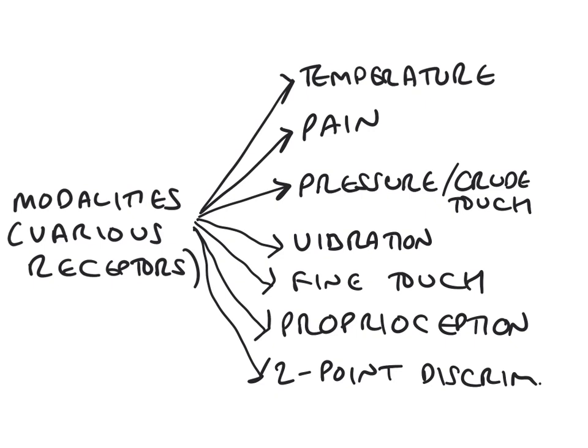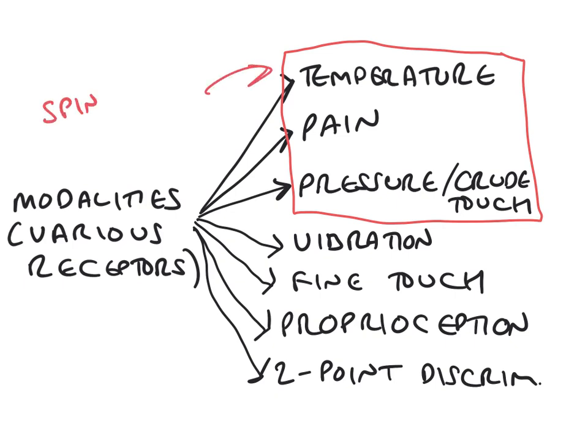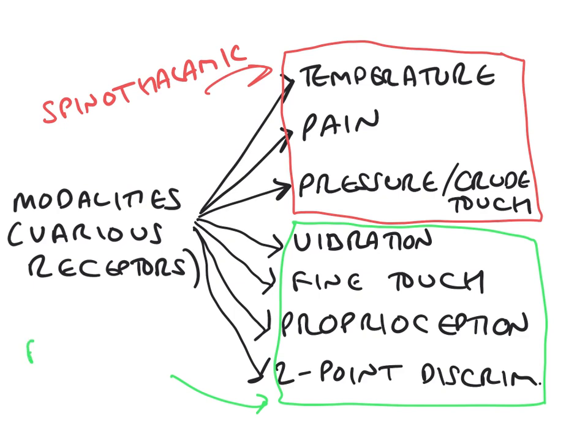Now, I have listed these modalities in this order for a specific reason. And that reason is that these modalities are carried in different pathways within the spinal cord. So this set of modalities here are carried by the spinothalamic pathway. The spinothalamic system carries the modalities of temperature, pain, pressure and crude touch. Whereas the modalities indicated here in green are carried by a different system within the spinal cord, this being the dorsal column system.